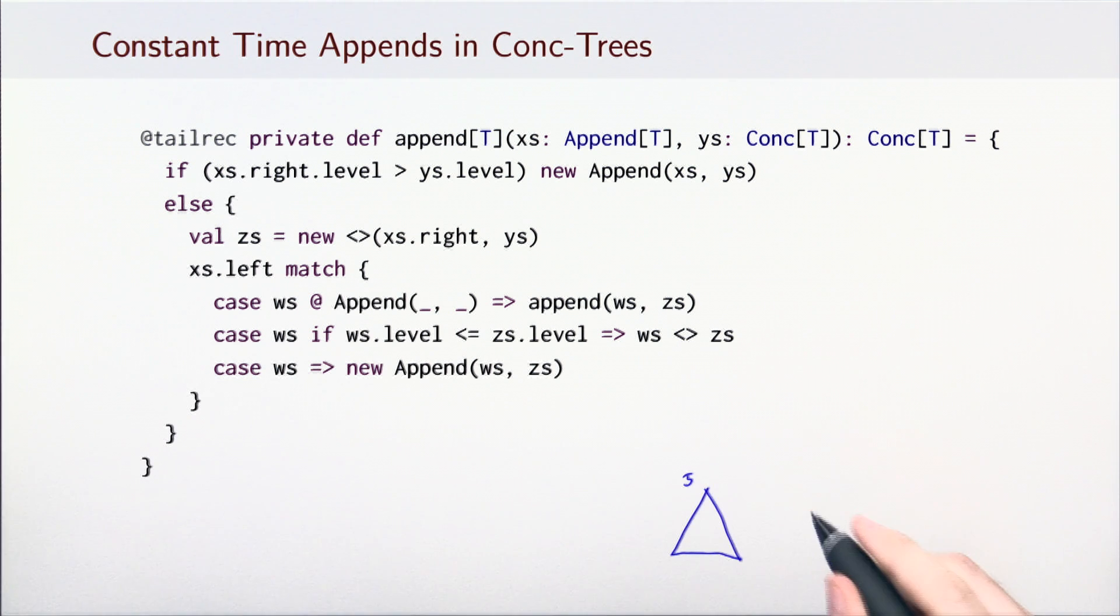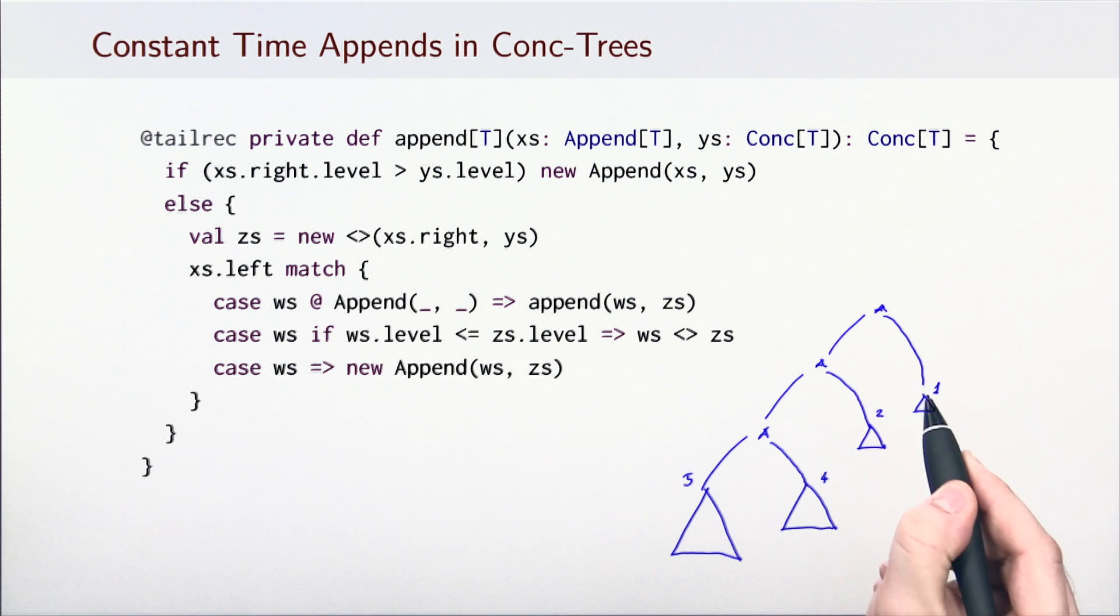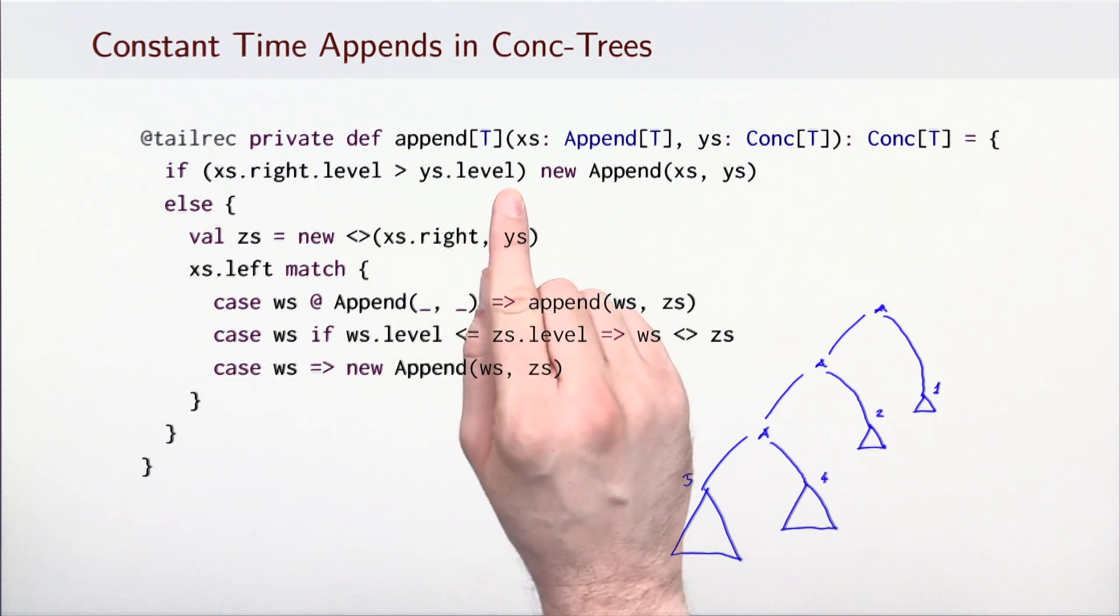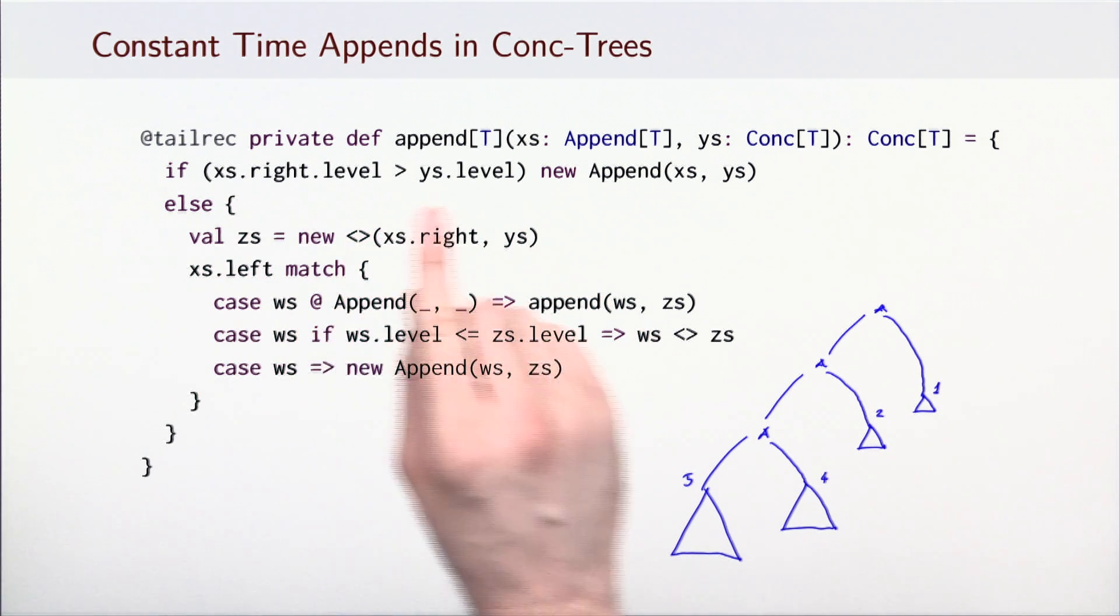The append method essentially implements counting in a binary number system. If the tree ys has a level smaller than the right subtree of xs, a new Append node is created. Here is an example.